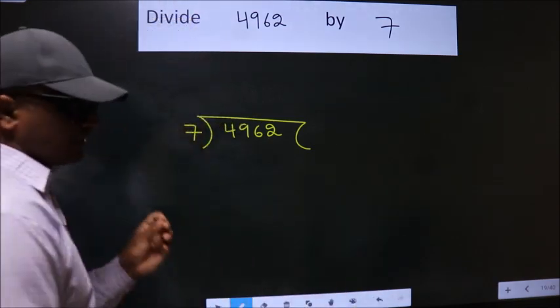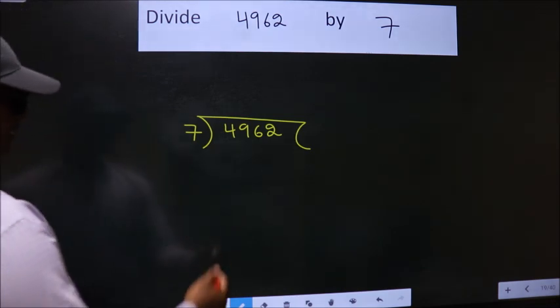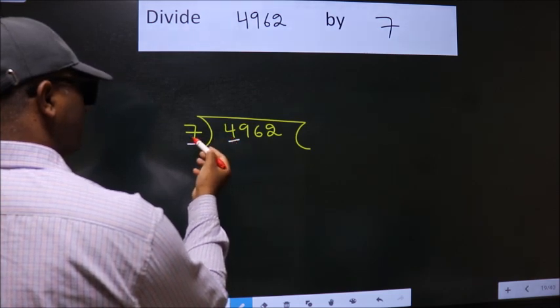This is your step 1. Next, here we have 4. Here 7. 4 is smaller than 7.